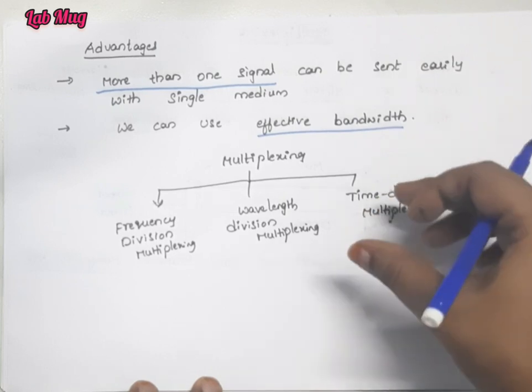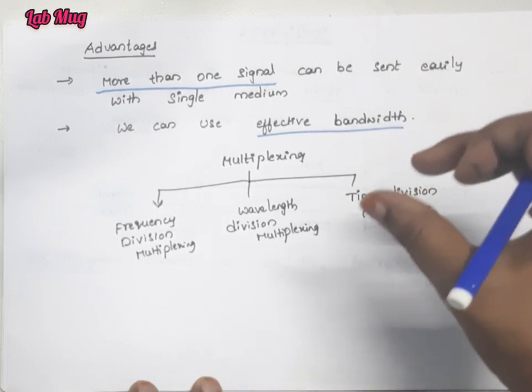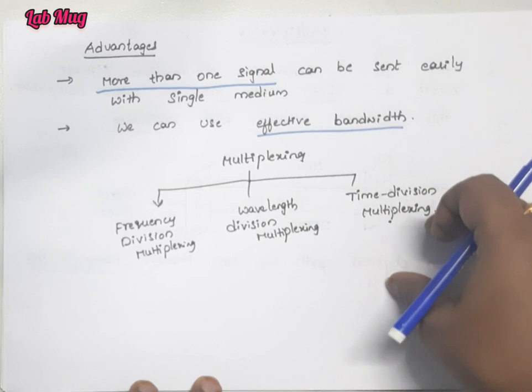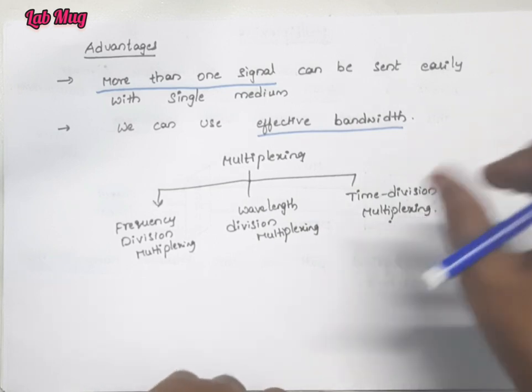In the next class, we will complete the total concept of types of multiplexing.